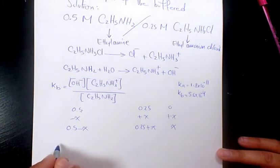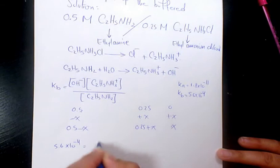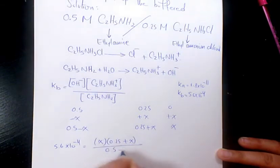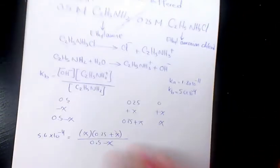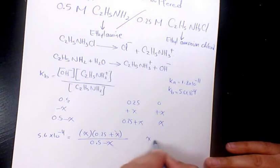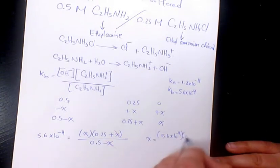So then we can say 5.6 times 10 to the power of negative 4 will be X times 0.25 plus X divided by 0.5 minus X. And if we neglect X in here, X will be 5.6 times 10 to the power of negative 4 times 0.5 divided by 0.25.